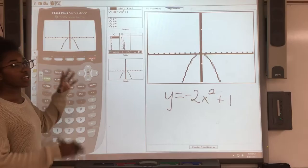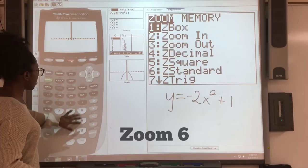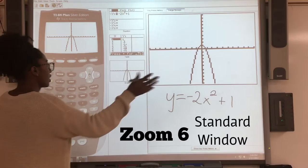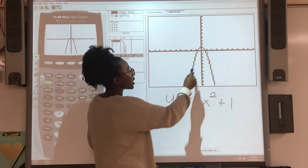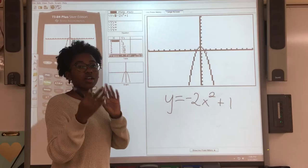I never changed the windows from the last problem. When the windows are all messed up like this, you can just do zoom, 6. That is the standard window—negative 10, positive 10, all around. You can see here that it crosses the x-axis at two places. That's where you find your solutions in a quadratic. The solution, zero, x-intercept—it's all the same thing.